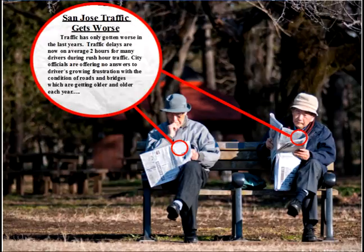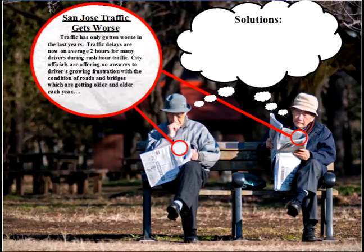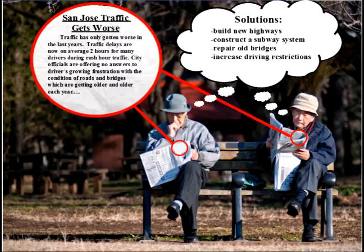They're reading the article and thinking about some solutions to this problem. San Jose's traffic is getting worse and worse, so they're thinking about solutions — maybe to build new highways, or to construct a subway system, or maybe to repair old bridges, or even to increase driving restrictions. These are their suggestions and opinions for what the solution to the problem could be.